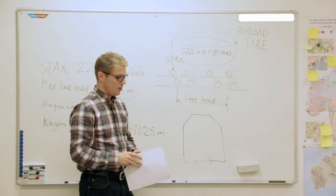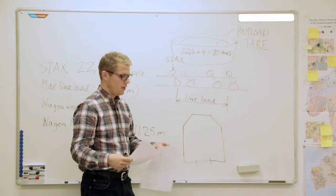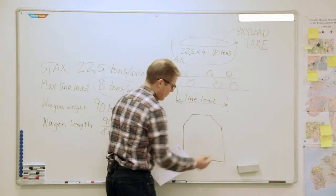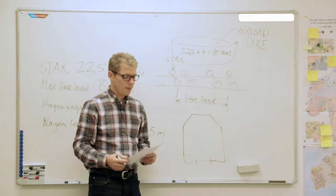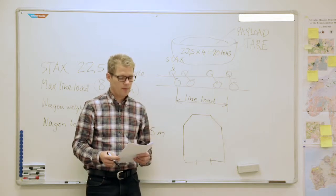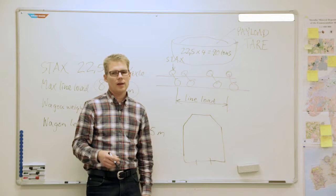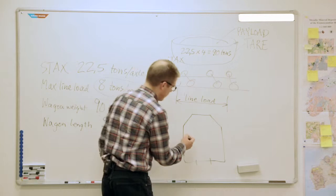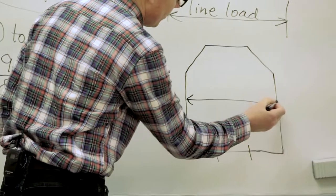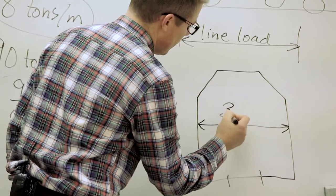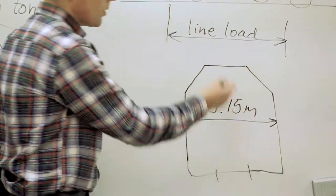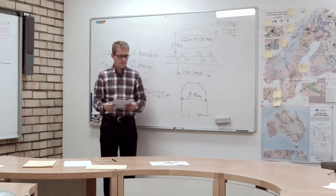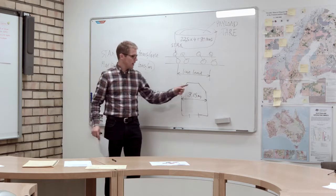You can look up the loading profile for each railroad and get the measurements. For example, a very common one in Europe is defined by UIC 505-1, called the G1 type, and it's 3.15 meters in width. There's also a certain height, but as I said, the wagon